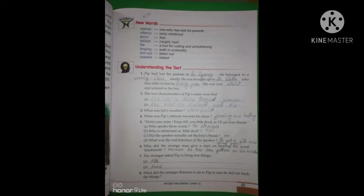And today we are going to do our chapter 11, that is Pip at the Convicts exercise. You all open your page, open your book on page number 65. And first you all do the new words that are difficult words, word meanings.